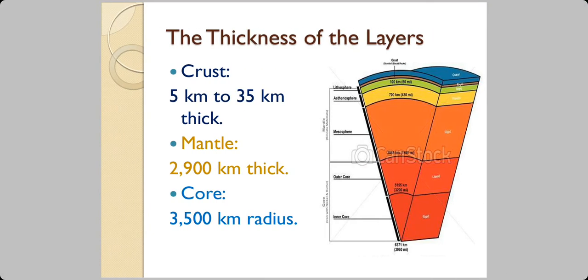Now, if we were to cut a section from our fruit or from our Earth, we can see these three layers: crust which is 5 km thick in the oceanic areas and 35 km thick in the continental areas. The mantle is about 2900 km thick and the core is having a radius of 3500 km.